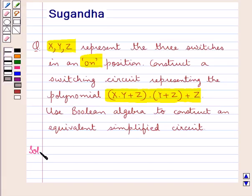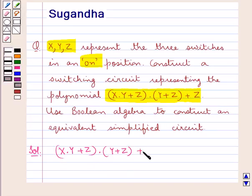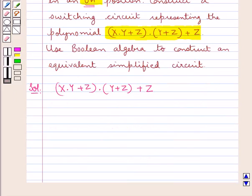Let's proceed with the solution now. We are given the polynomial x into y plus z, the whole, into y plus z, the whole, plus z, where x, y, and z are three switches which are in the on position. We are supposed to construct a switching circuit which would represent this polynomial.